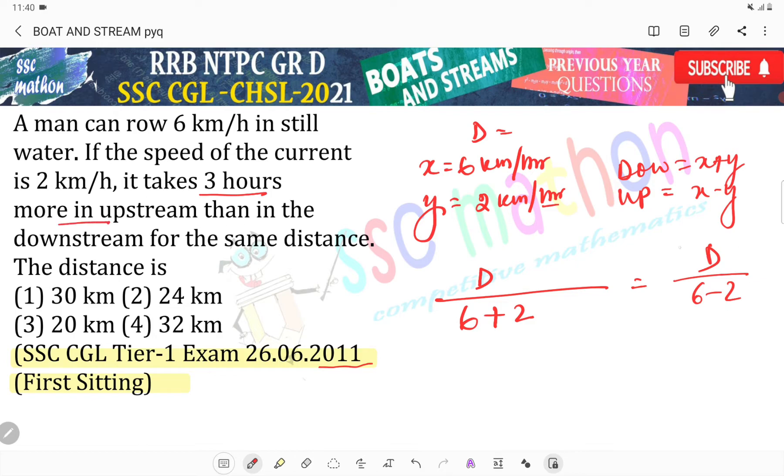So downstream is this distance. What is this distance? We have to add 3 hours. So plus 3 equals this. So D divided by 8 plus 3 equals D divided by 4.